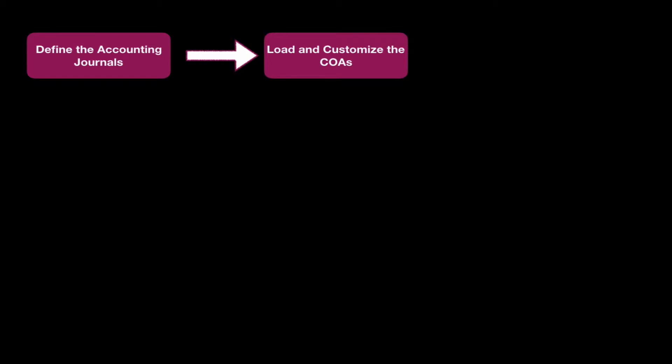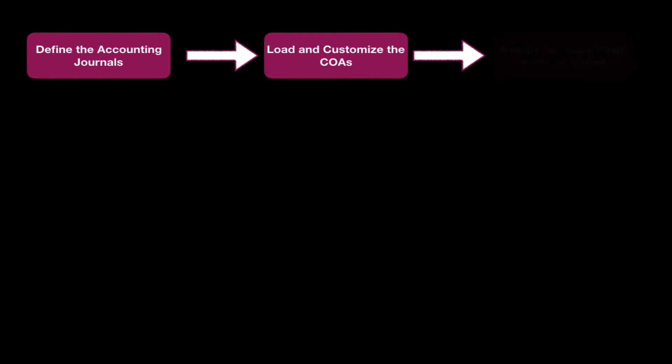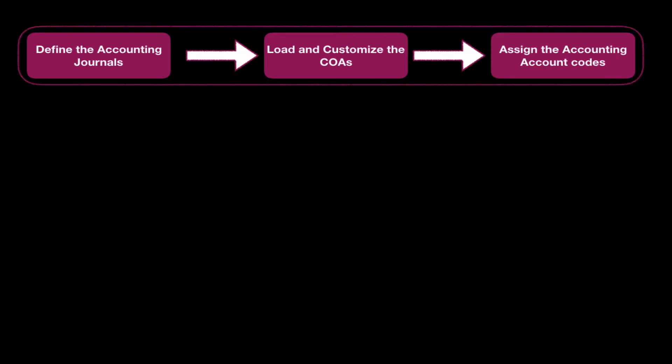After defining your accounting journals and finalizing the chart of accounts, you need to assign the accounting account codes. You will go to your customers and assign them the codes of the accounting accounts you created — for your vendors, for your products, for your bank accounts, for everything. At this phase you have created the accounts, created the codes, and assigned the codes to your business elements.